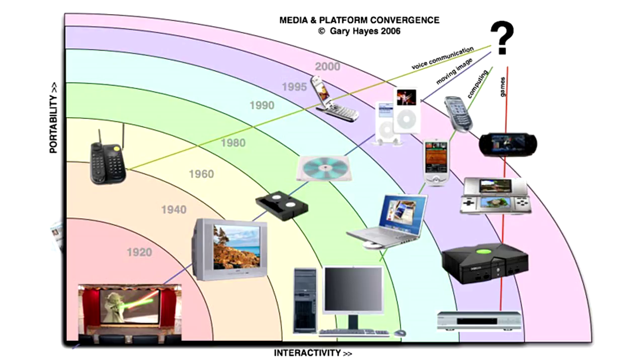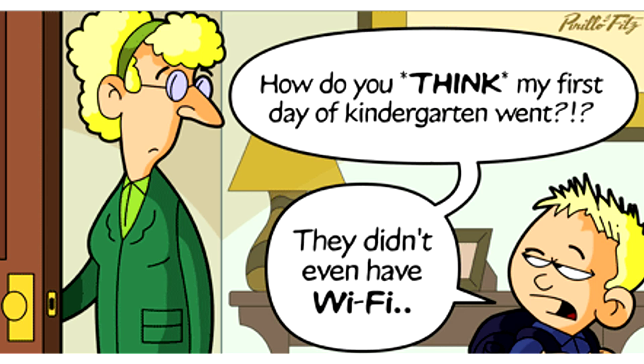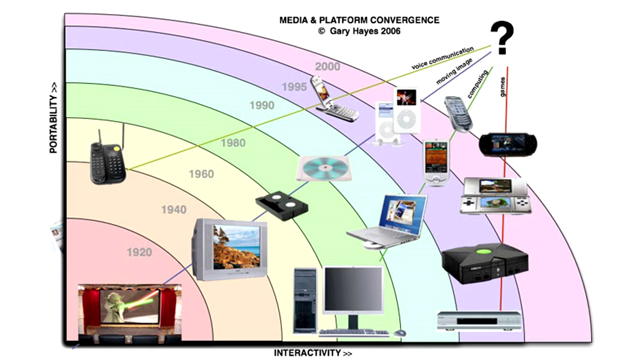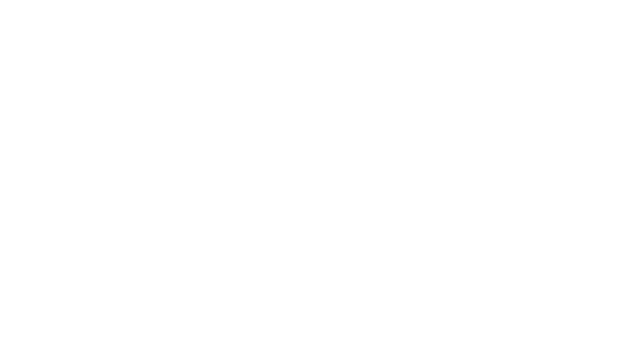The current generation of technology has been a collection of several technologies from before made into one. An example of technological convergence are smartphones, having the ability to be used as normal phones, an MP3 player, a camera, or even as a connection hotspot. This links to people who are digital natives — more adapted to technology compared to previous generations.